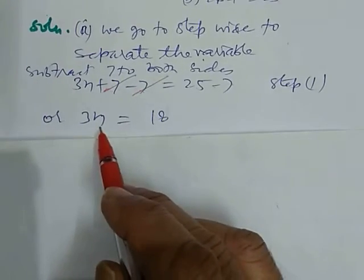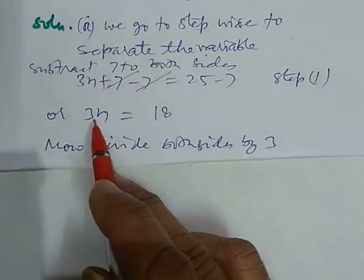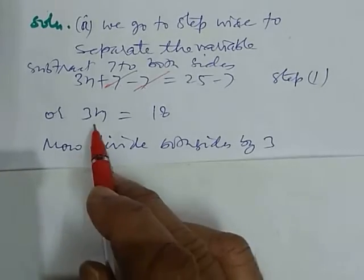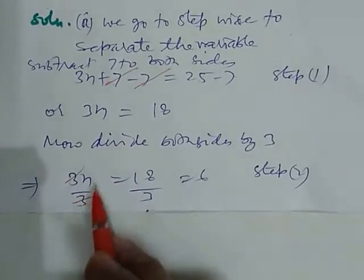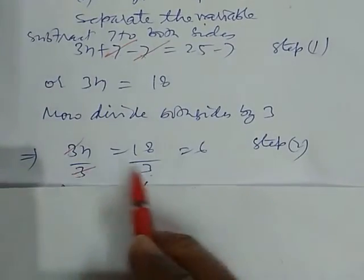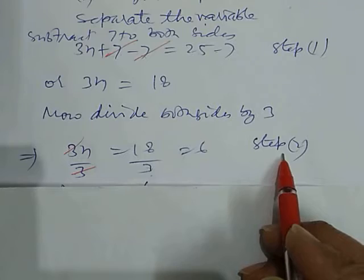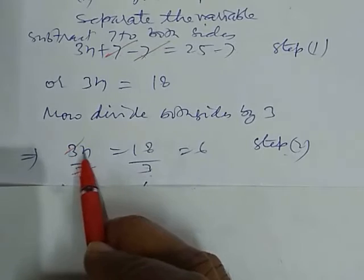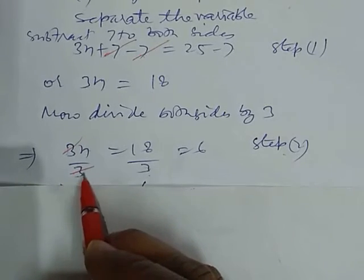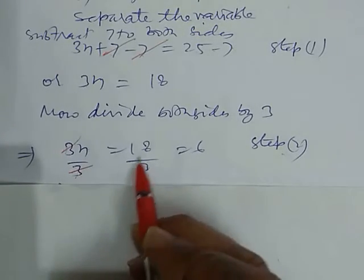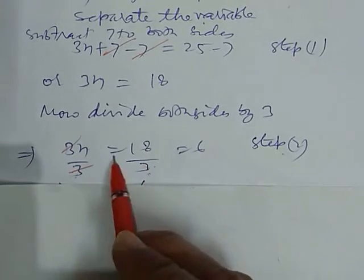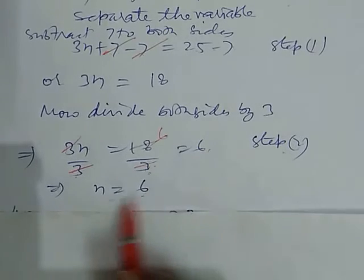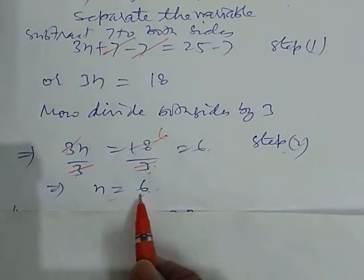The equation is now simpler: 3n equals 18. Step two: we want to remove 3, which is in multiplying form, so we divide both sides by 3. So 3n over 3 equals 18 over 3. The 3 cancels out, and 18 divided by 3 equals 6. So n equals 6. This is the solution. We separate the variables and get the answer.